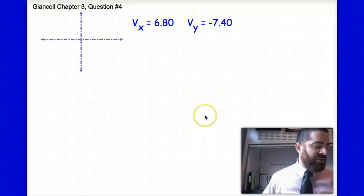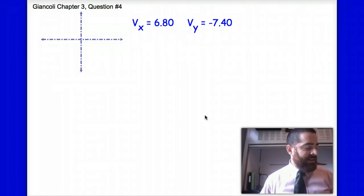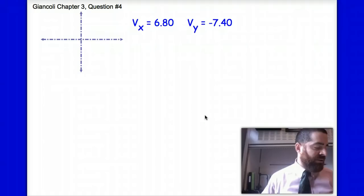This is problem number four from chapter three in Giancoli. The question simply reads, if Vx is 6.80 units and Vy is negative 7.40 units, determine the magnitude and direction of the vector V. I've gone ahead and written our initial information here.